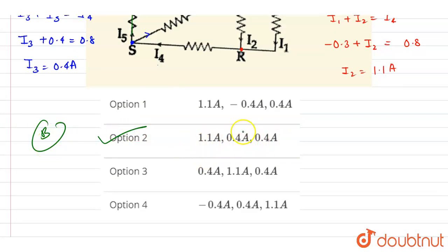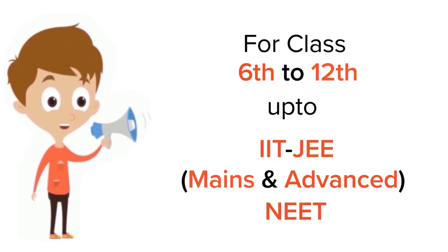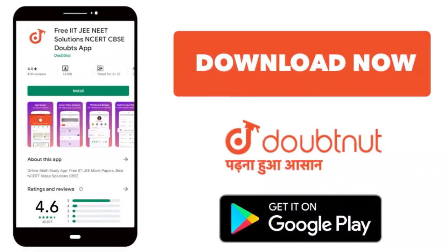1.1, 0.4, and 0.4 ampere. Thank you. For class 6th to 12th, IIT-JEE and NEET level, trusted by more than 5 crore students. Download Doubtnut app today.